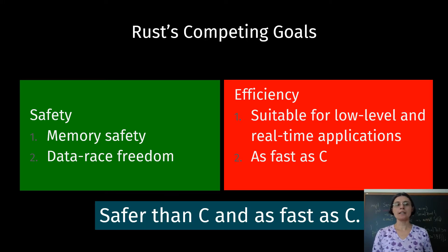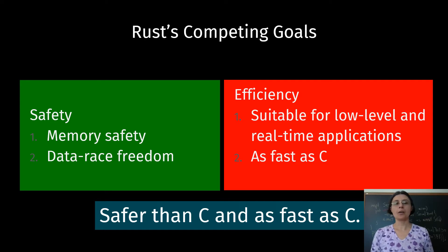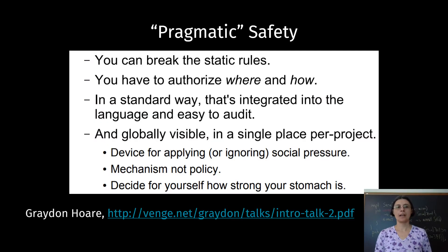Thus, Rust aims at being safer than C, not necessarily safe, and as fast as C. Graydon Hall called Rust's approach to safety pragmatic safety.